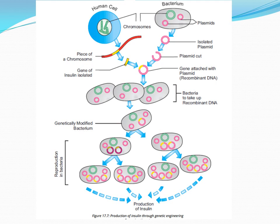The fourth step is the growth of the GMO — the genetically modified organism or genetically modified bacteria. This bacteria or GMO will grow, multiply, and give us multiple copies of the gene of interest, which was insulin in this case. The gene of interest multiplies along with the division of the plasmid: as the bacteria multiplies, the plasmid multiplies, and automatically the gene of interest gets multiplied. The last step is the expression of the gene, which is the most important step.